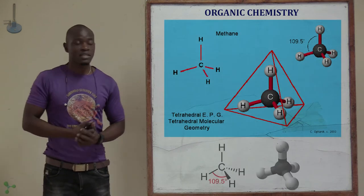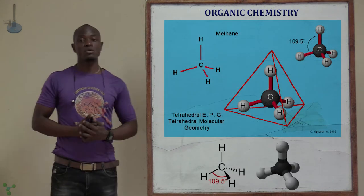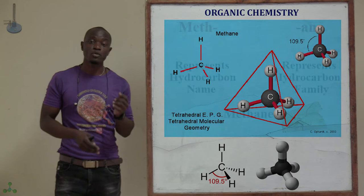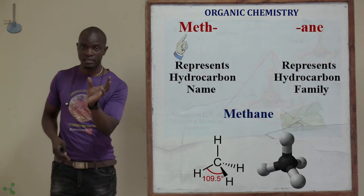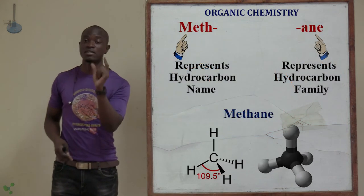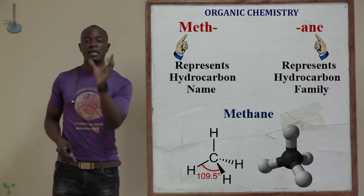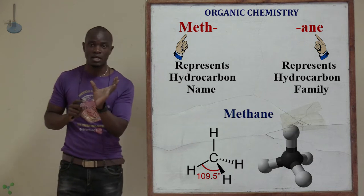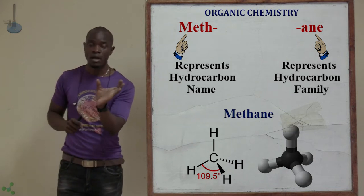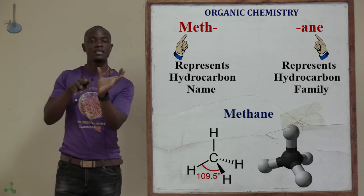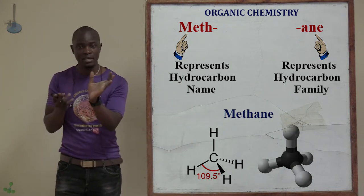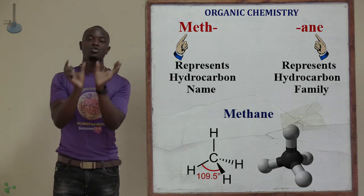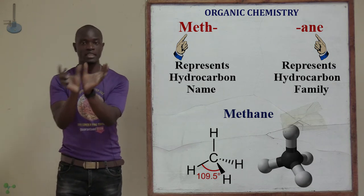For example, the first one is methane. The name of this structure is supposed to be 'meth' — M-E-T-H — that's the prefix for one carbon atom. But since it is in the alkane family, we finish with '-ane' to read methane.